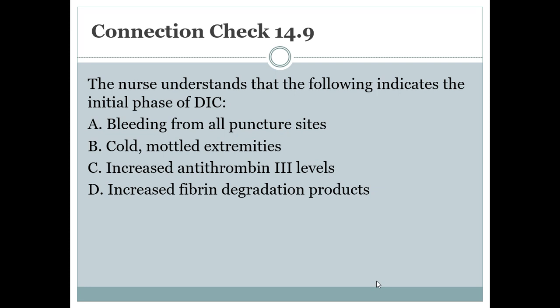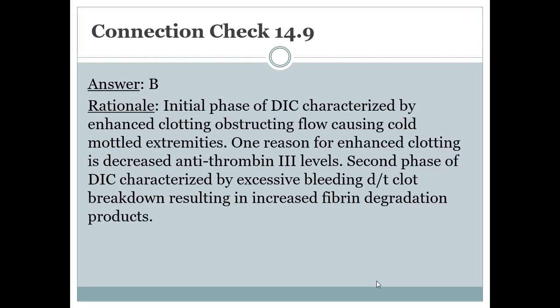Connection check: which finding indicates the initial phase of DIC? The answer is B — cold mottled extremities. The initial phase of DIC is characterized by enhanced clotting obstructing flow, causing cold mottled extremities. One reason for enhanced clotting is decreased antithrombin 3 levels. The second phase is characterized by excessive bleeding due to clot breakdown, resulting in increased fibrin degradation products.